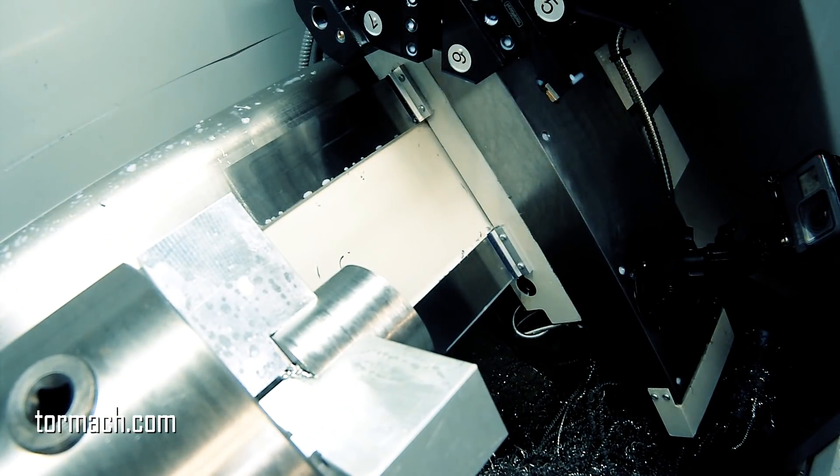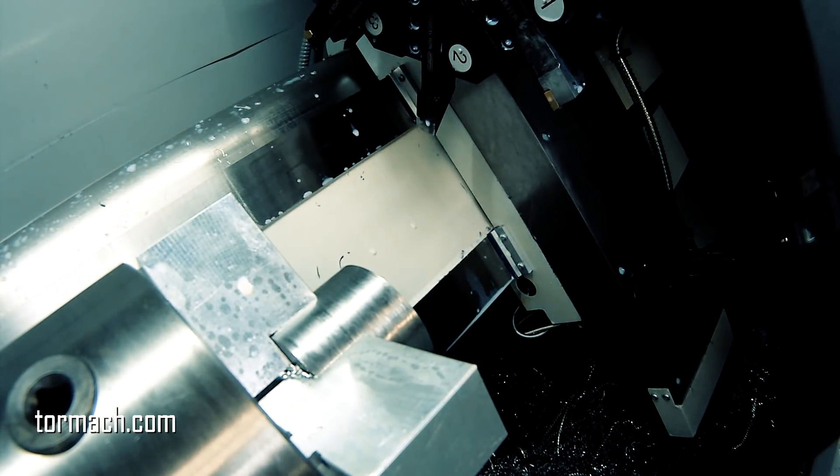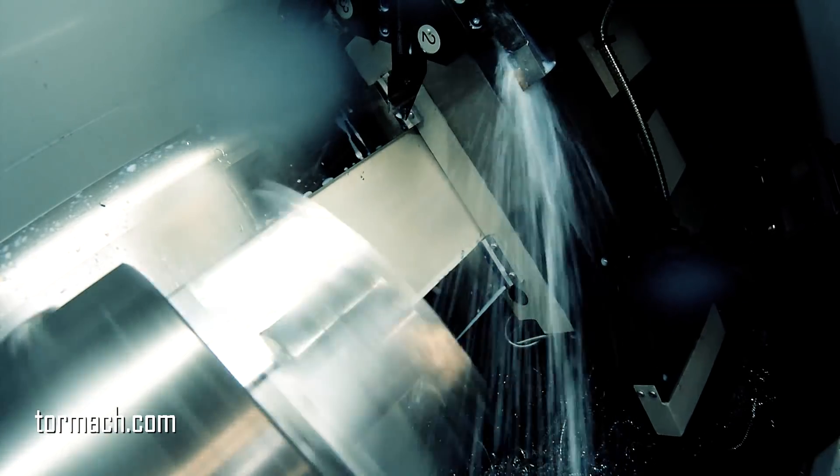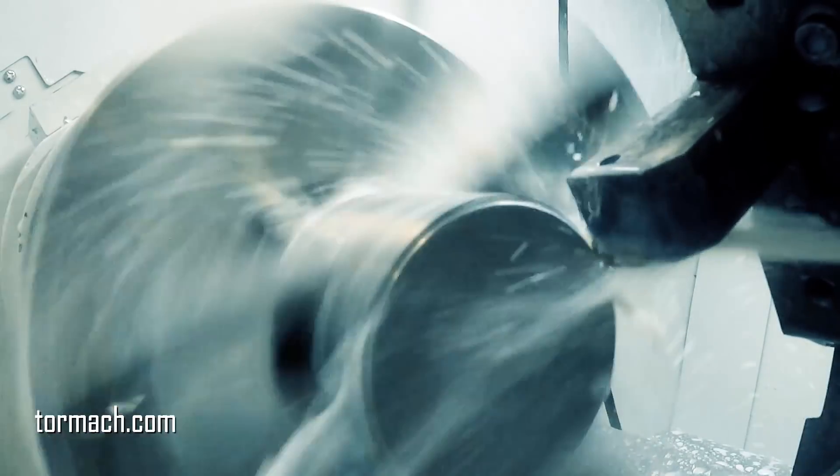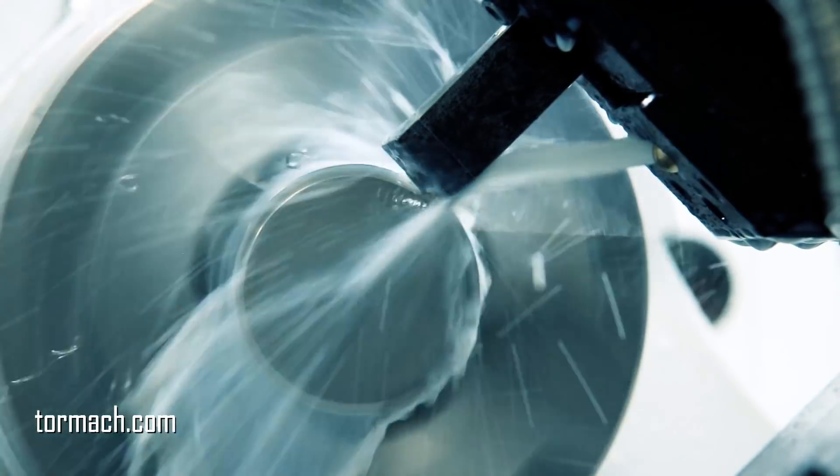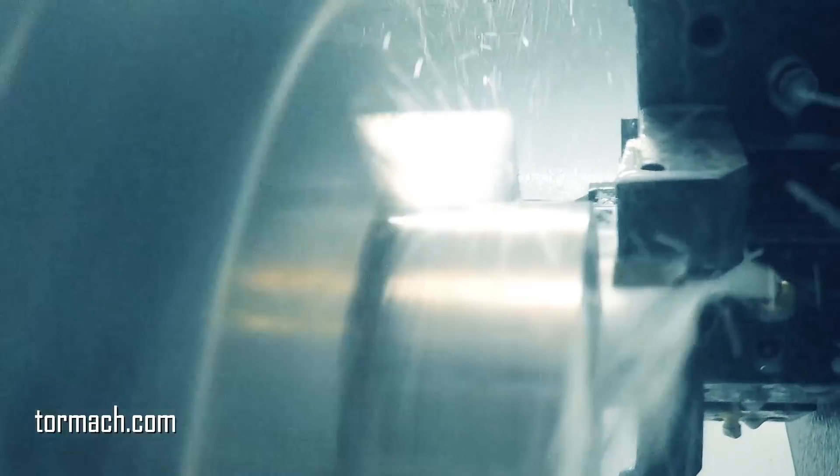So let's jump into this thing. You can see here we started off this project with some aluminum soft jaws. We just bored them out to the diameter of the stock, which is about two and a quarter inch. This was 17-4 stainless, so we're hanging on to about an inch of the part here just in some soft jaws. We come in here and do some roughing on the facing.